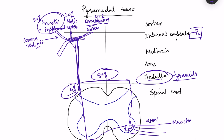There is some confusion here: the cells in the motor cortex from which these fibers arise are also known as pyramidal cells or Betz cells. However, the tract is named not because of these cells but because of the medullary pyramids. These Betz cells are very large giant cells located in layer 5 of the cerebral cortex.